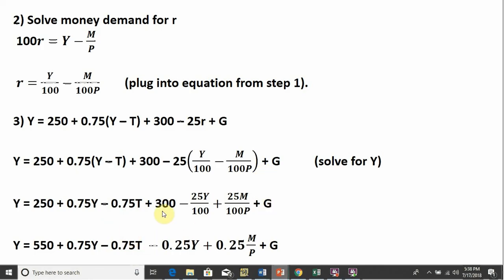Simplifying some more, 300 plus 250 is 550. This minus 25Y divided by 100, we can write as minus 0.25Y. Likewise, this 25 divided by 100 is another 0.25.